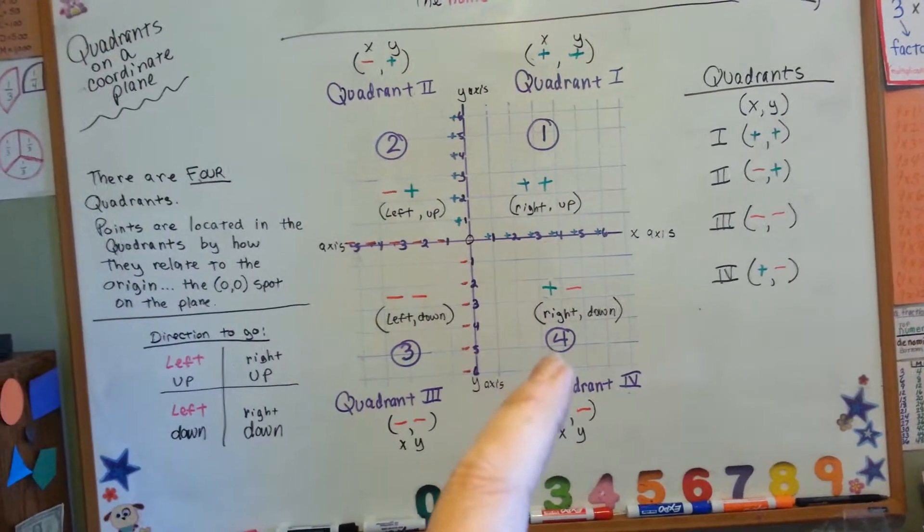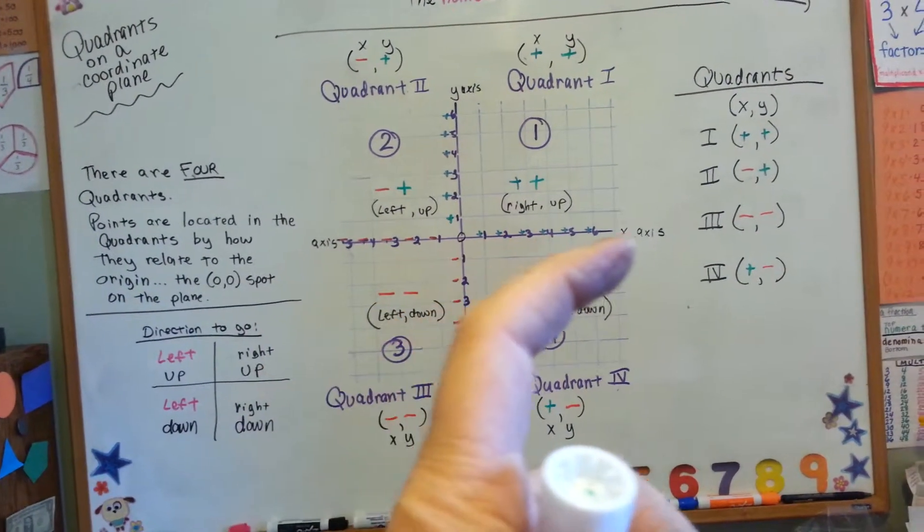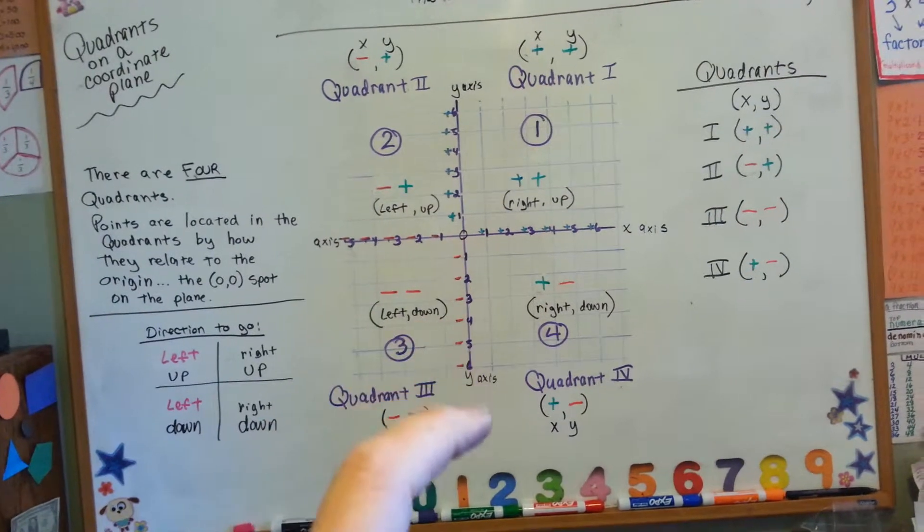And for quadrant 4, you go to the right and down. 1, 2, 3, 4, 5, 6, and 1, 2, 3, 4, 5, 6.